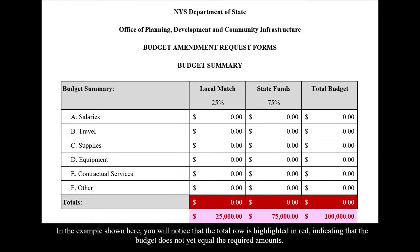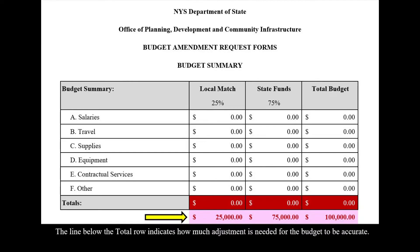In the example shown here, you will notice that the total row is highlighted in red, indicating that the budget does not yet equal the required amounts. The line below the total row indicates how much adjustment is needed for the budget to be accurate.